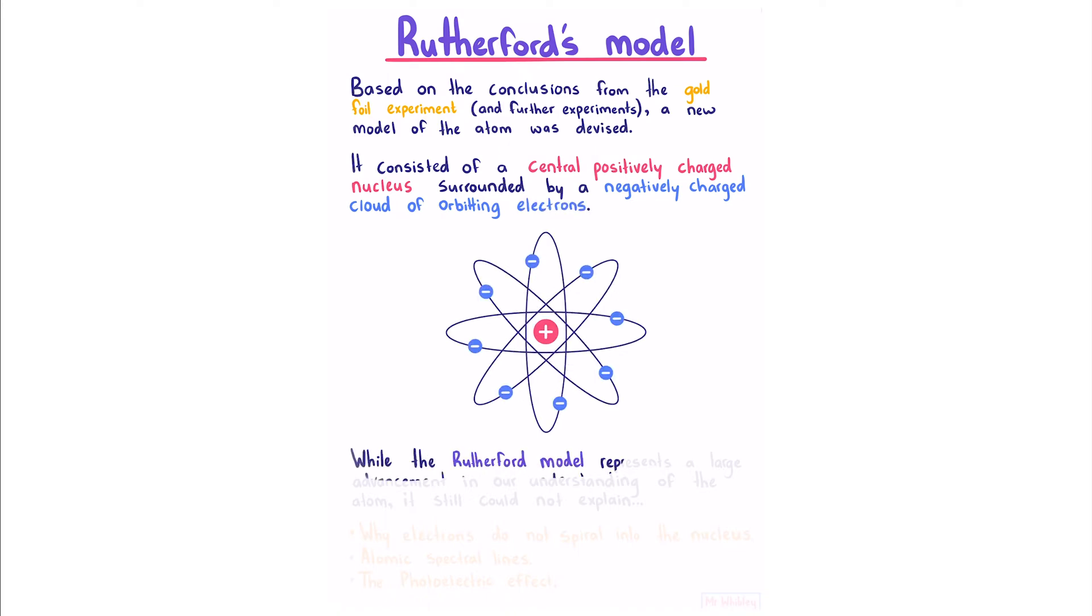While the Rutherford model represents a large advancement in our understanding of the atom, it still could not explain several things: why electrons do not spiral into the nucleus, atomic spectral lines which you'll learn about in Level 3, and the photoelectric effect, which you'll also learn in Level 3.